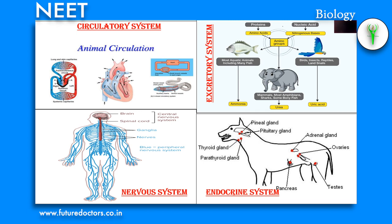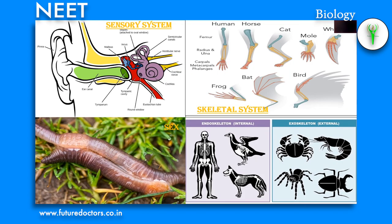Nervous system: the nervous system is the aggregation of nerve cells or neurons that help in coordinating and controlling various activities of the body. The endocrine system: endocrine glands are also called ductless glands and they secrete hormones. Endocrine glands occur in all vertebrates and in some invertebrates only. Sensory system: this system consists of specialized cells, tissues and organs which can pick up a stimulus and transmit it to the nervous system. Examples: antennae and tentacles.